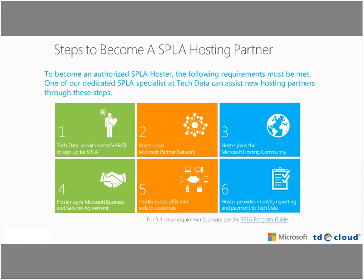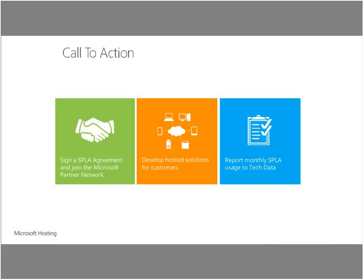This reinforces the process: sign the SPLA agreement, develop your solution, and report usage every month. Make sure you get into the rhythm of reporting every month to Tech Data — reports are due by the 10th of each month. If someone is on vacation, make sure someone else handles that responsibility. If an agreement goes 90 days without a usage report, it will get terminated. You can always sign a new agreement, but it's easier to just keep reporting every month.